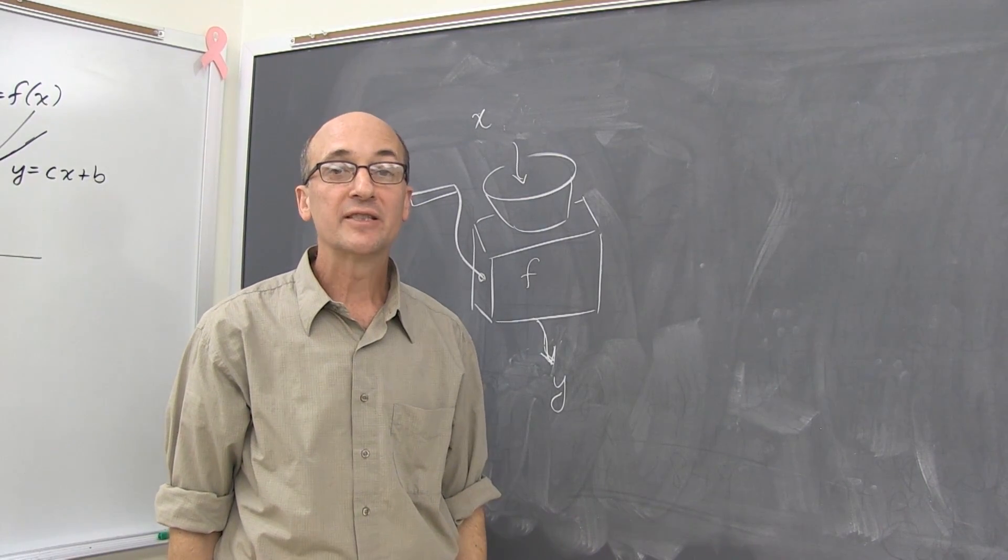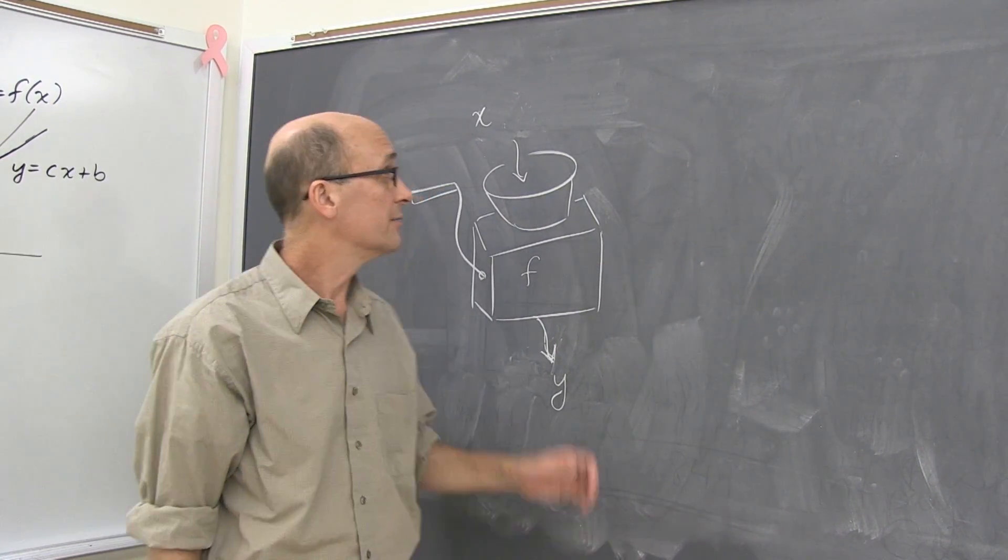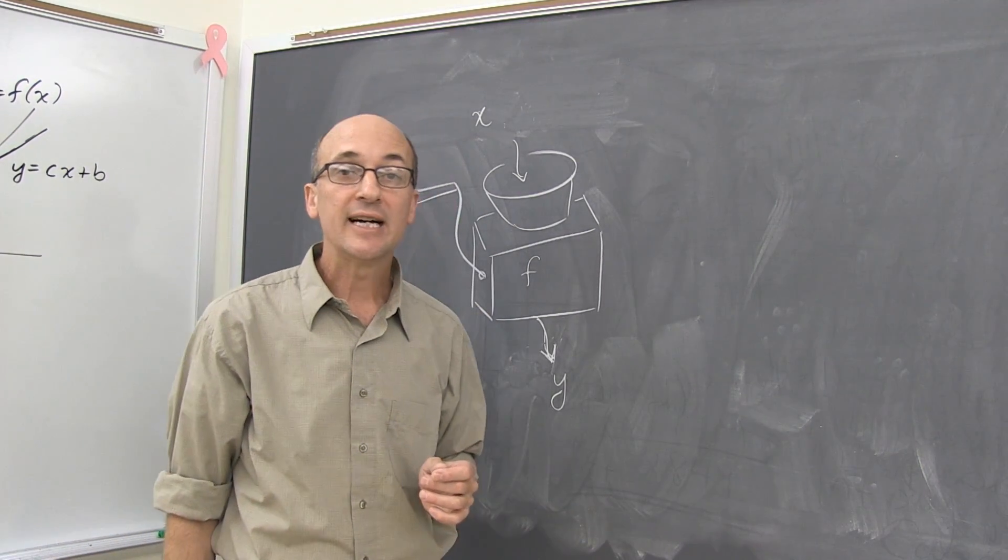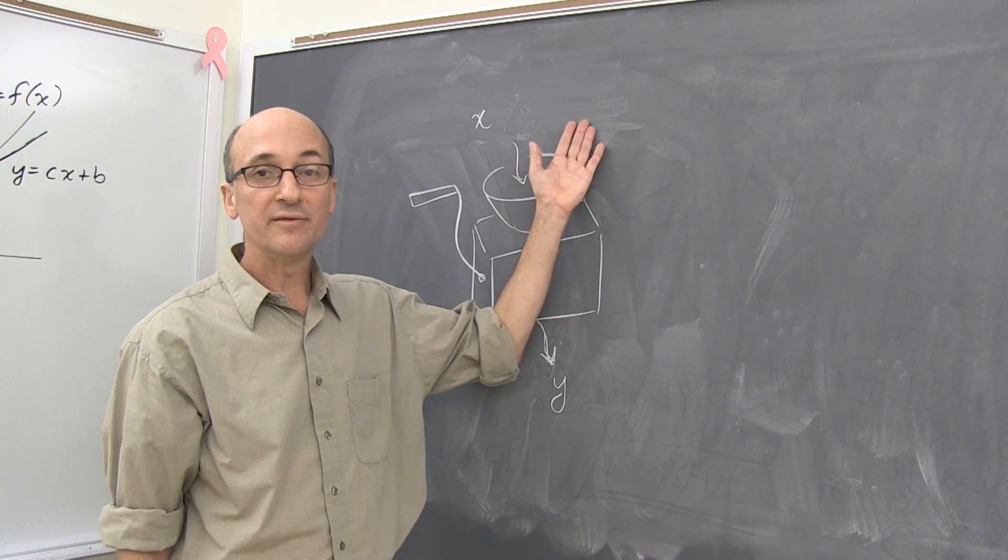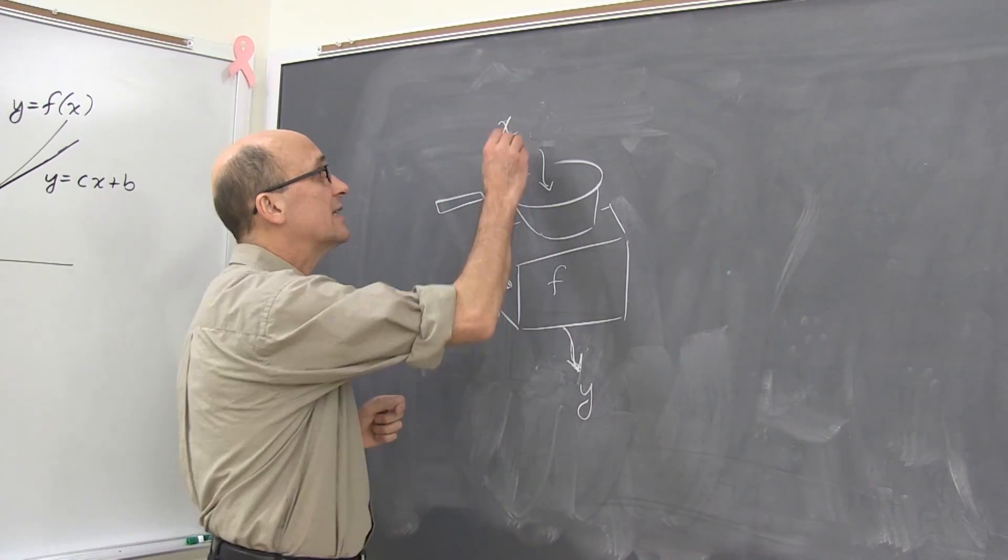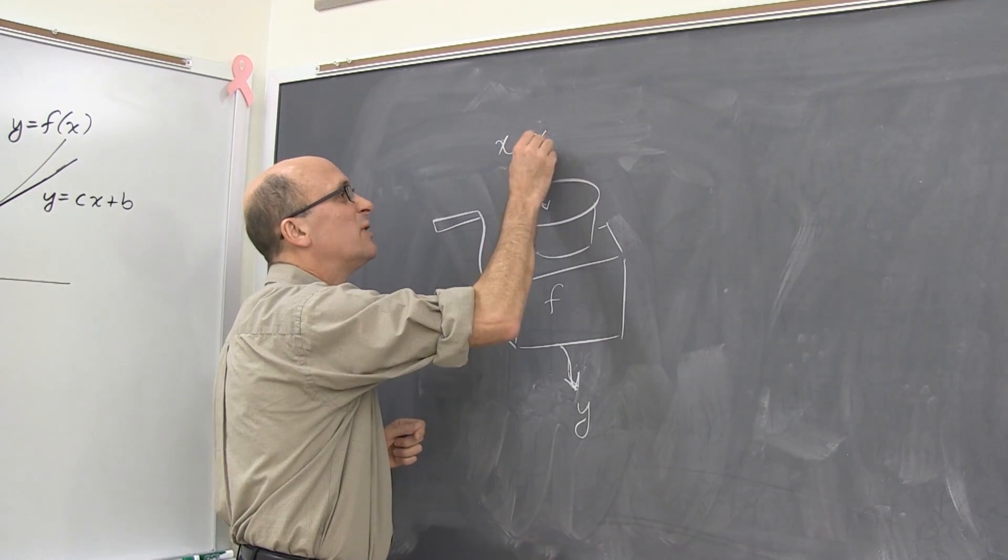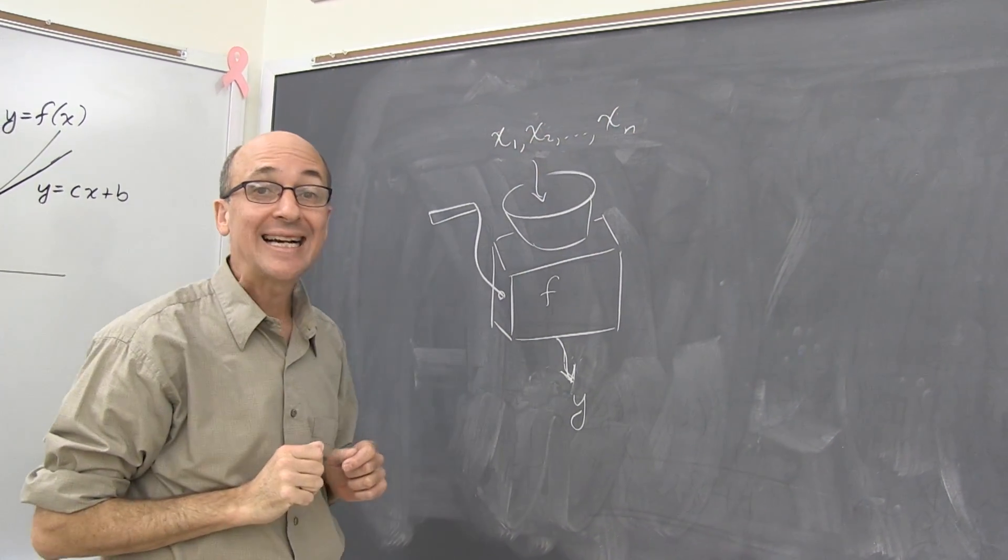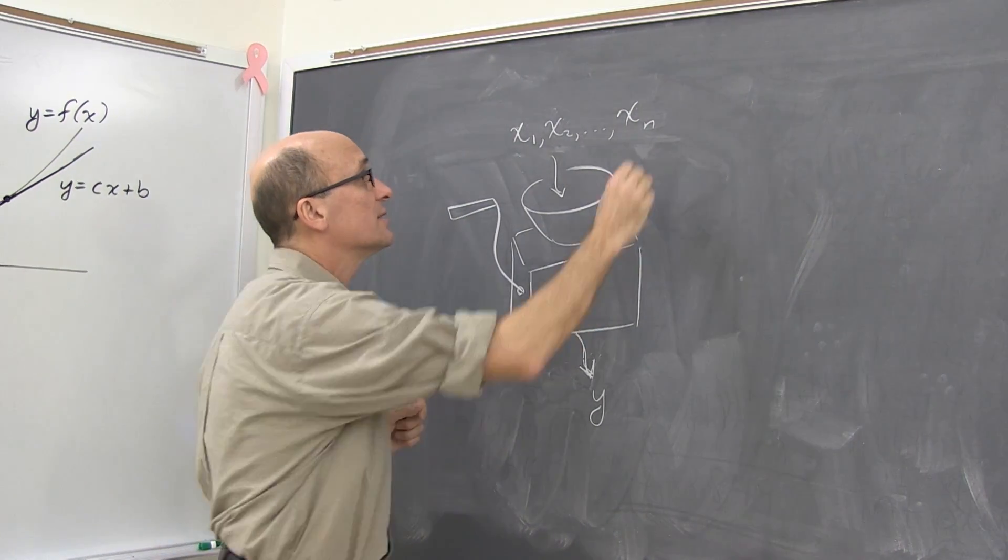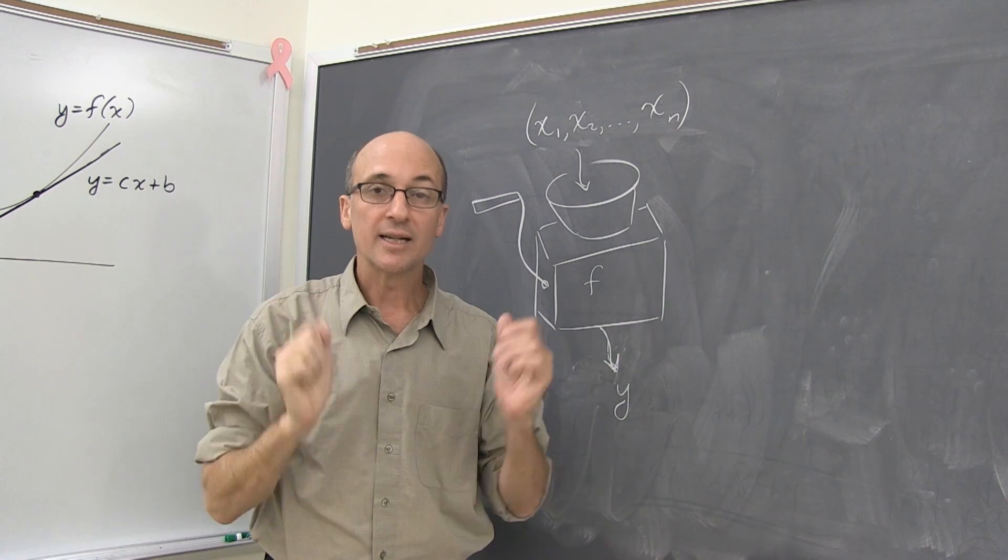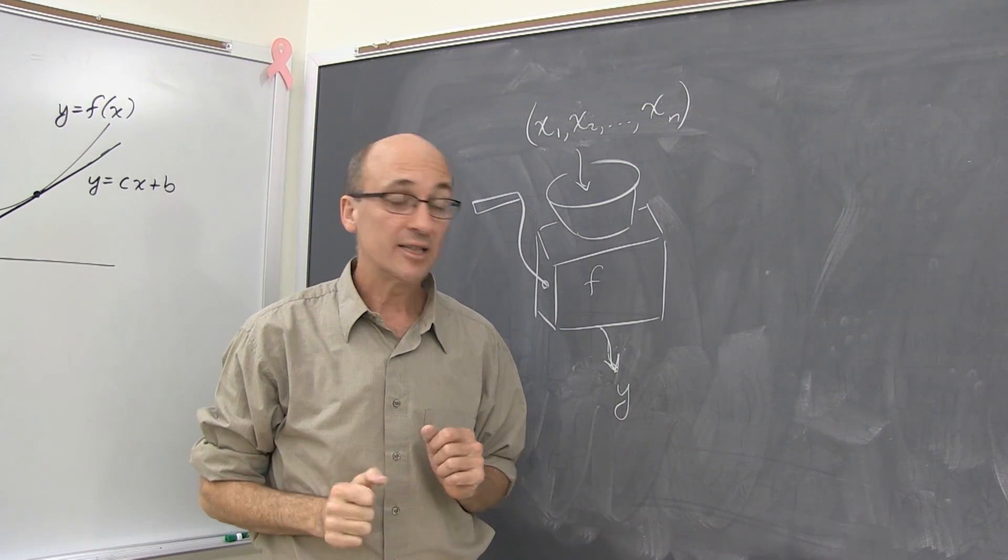Having learned a lot about functions of single variables, where you have a single input and a single output, the natural next step is to allow any number of input variables and any number of output variables. So x becomes now a list, x1, x2, and so on, up to some number of xn of variables. We bundle those variables together into a single object that we call a vector.